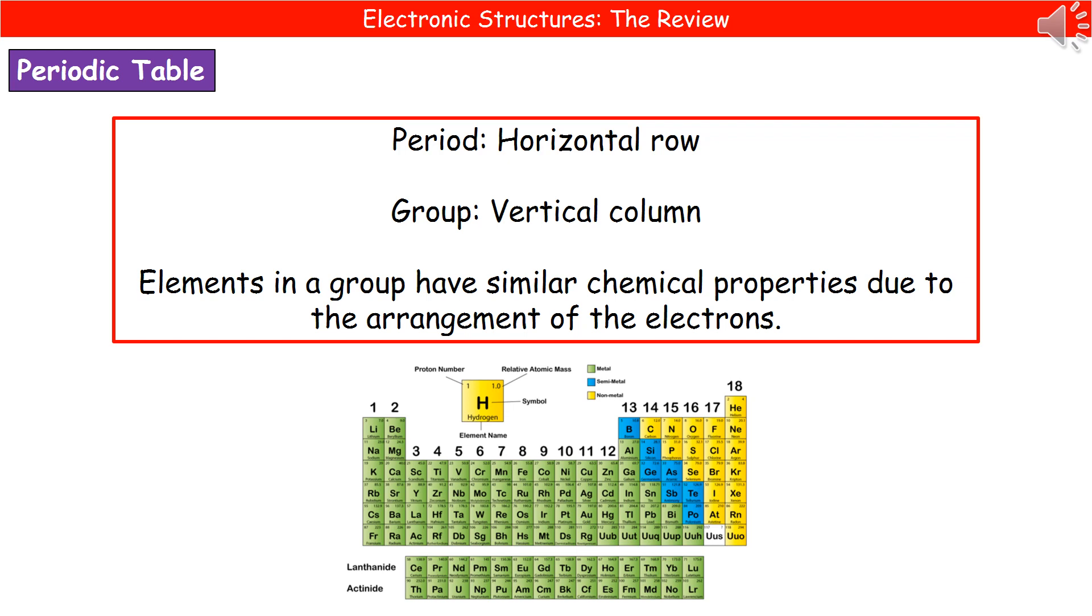Now what we do find is that any of the elements that are in a group together, so any of those elements in group 1 for example, have similar chemical properties. And that's all down to the arrangement of the electrons being similar.